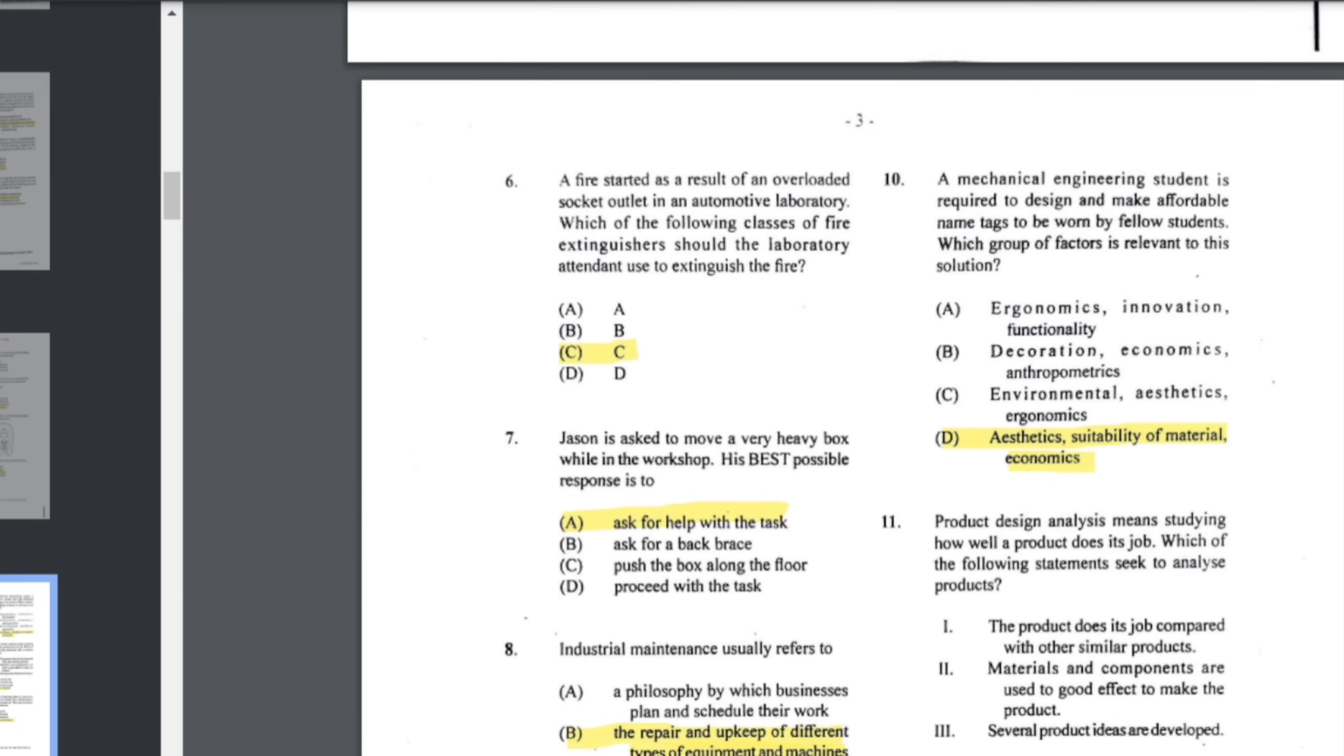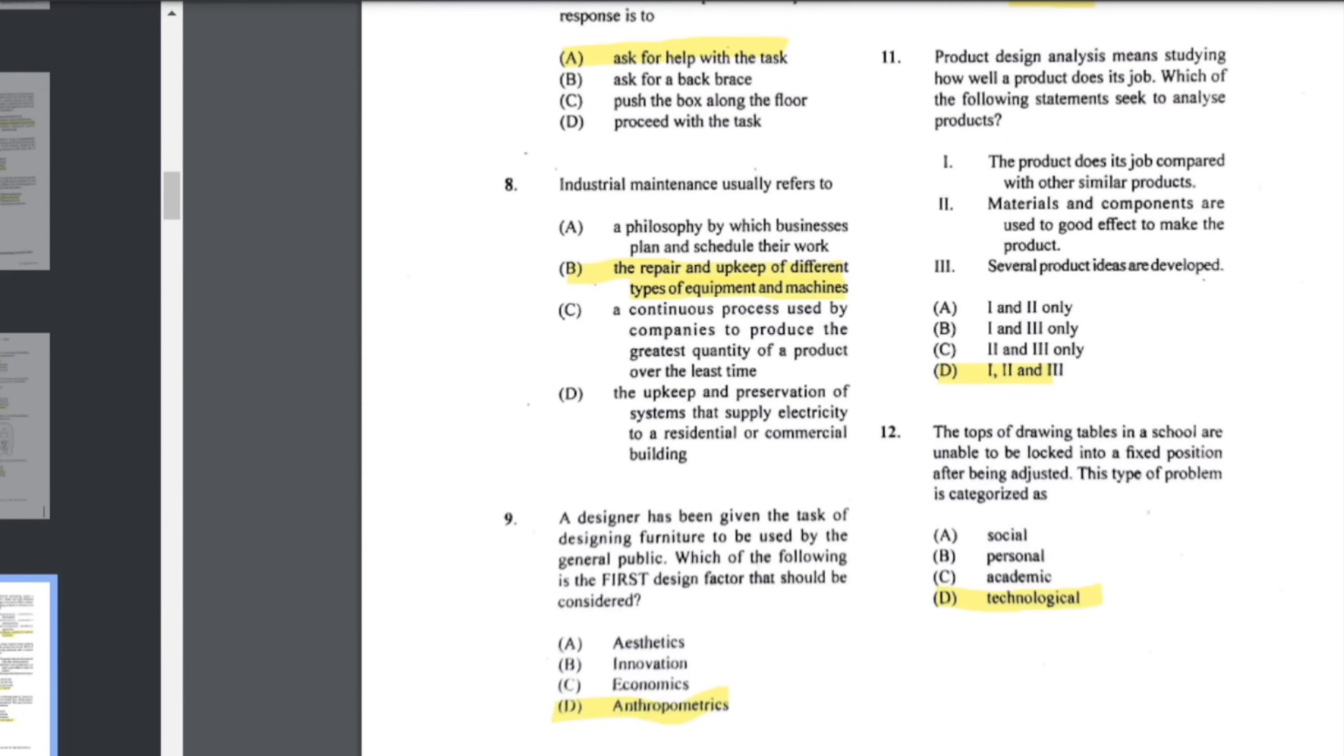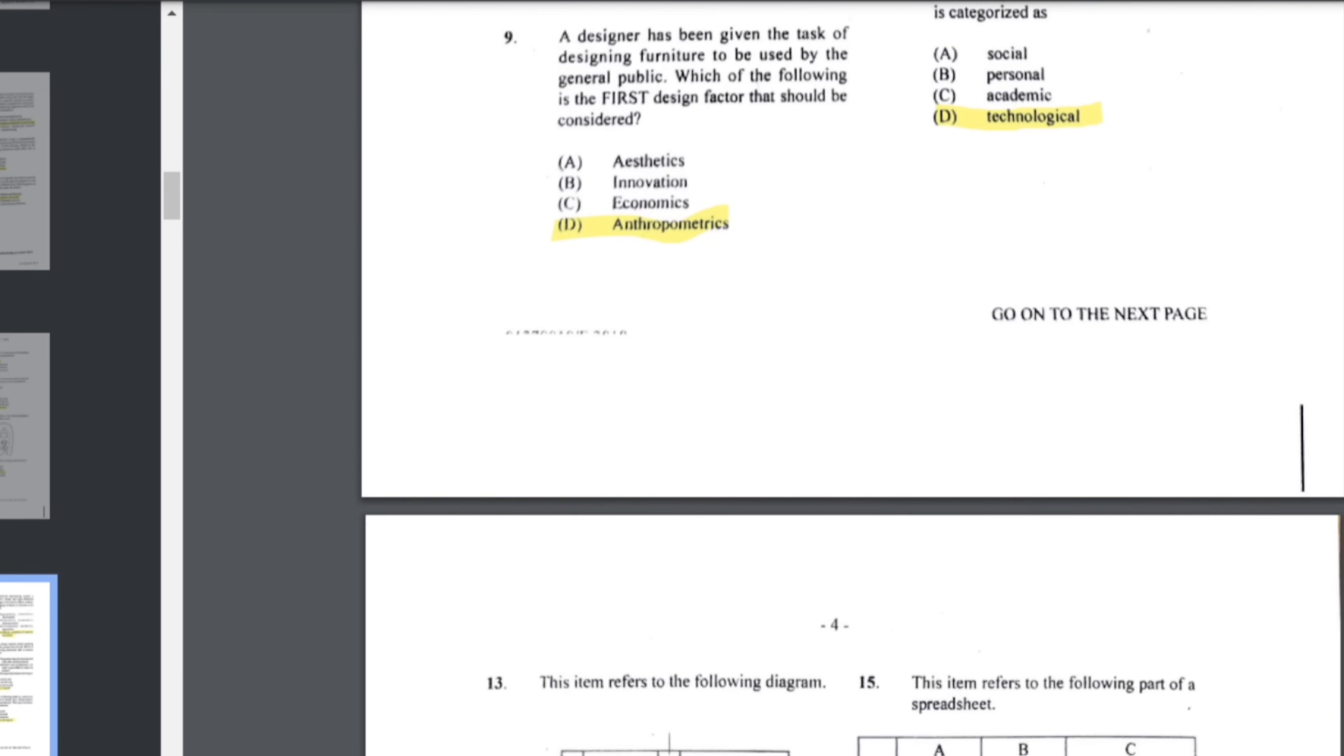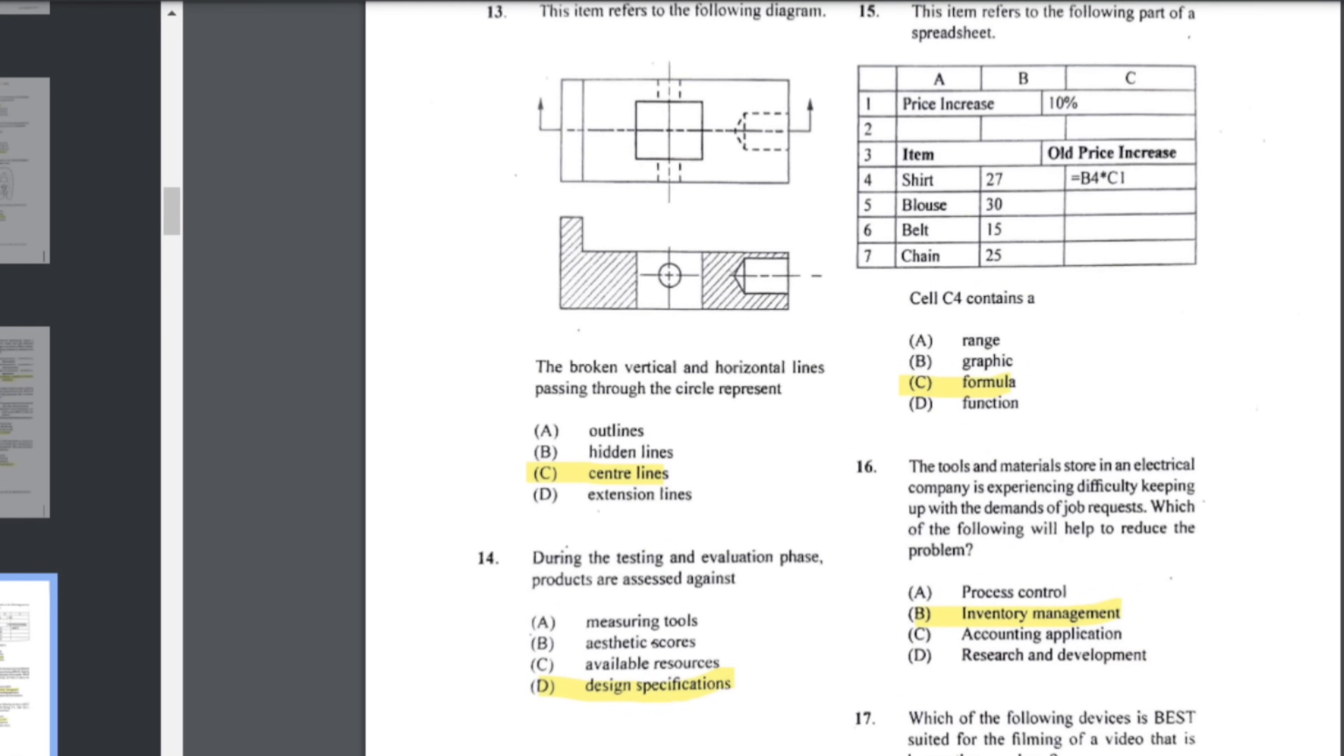Number 10: a mechanical engineering student is required to design and make affordable name tags to be worn by fellow students. Which group of factors is relevant to this solution? In this case it would be ergonomics, suitability of material, and the economics. Number 11: product design analysis means studying how well a product does its job. Which of the following statements seek to analyze products? The answer would be all of them. Number 12: the tops of drawing tables in the school are unable to be locked into a fixed position after being adjusted. This type of problem is categorized as a technological problem.